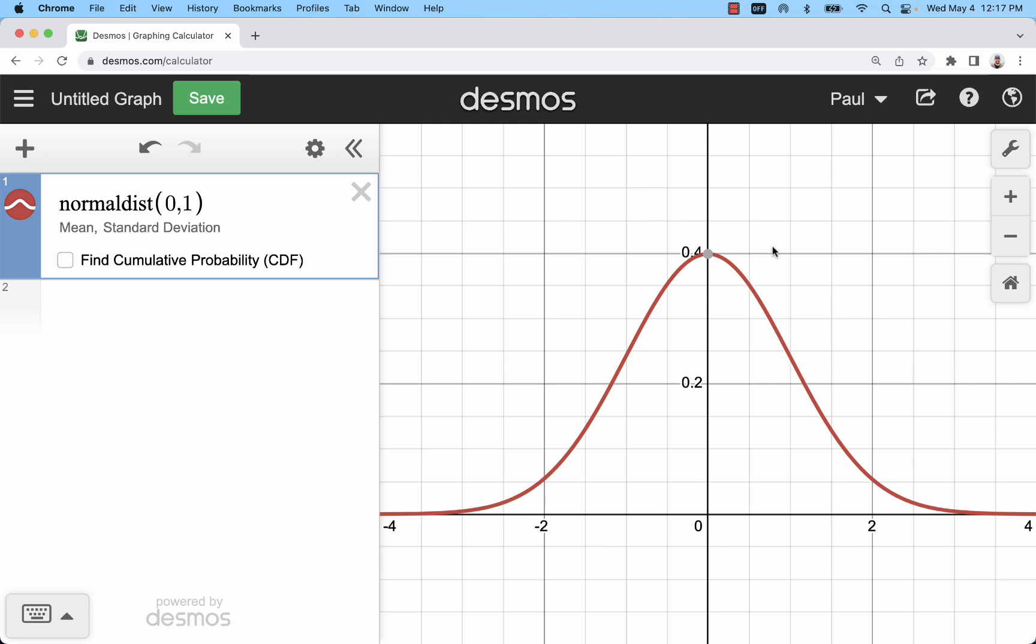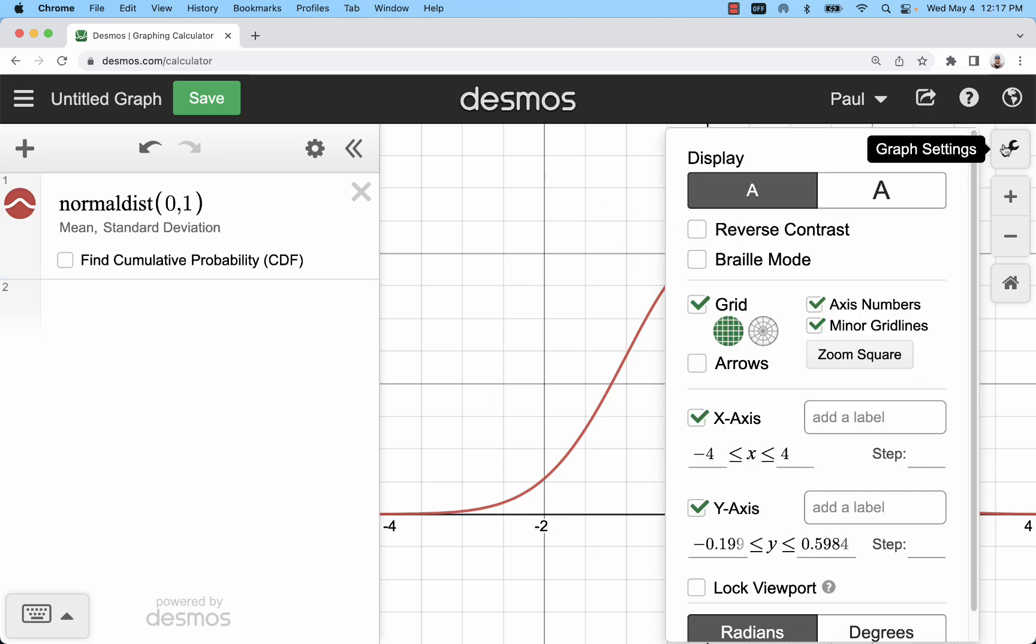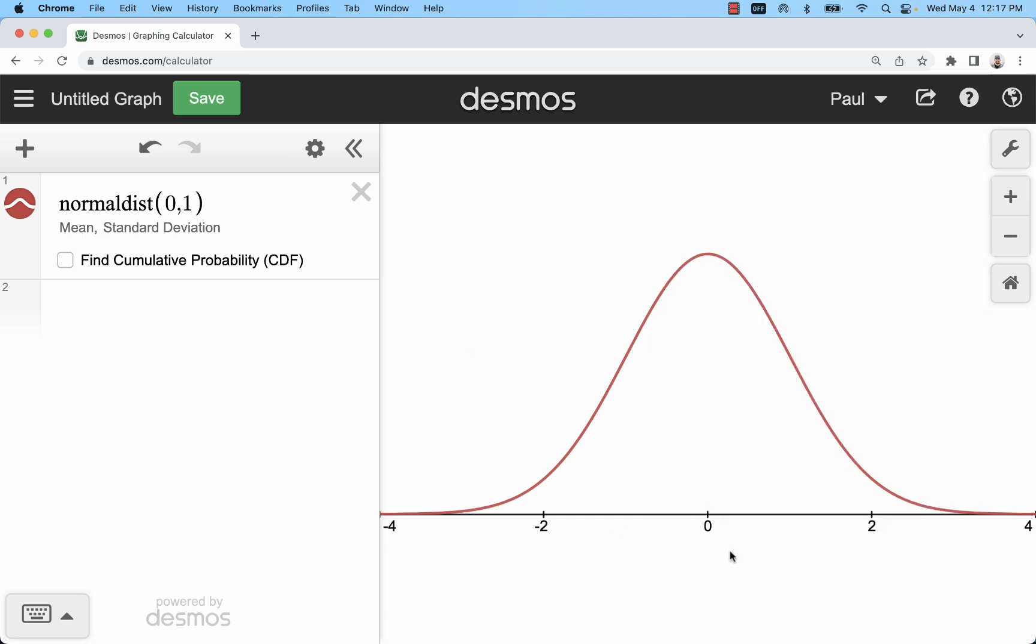When you're looking at this the Y value really does not matter too much. If you want to remove that axis you can. You can also even remove these grid lines. We really don't need them. All we're looking at is just the positions on the X axis. So I like to look at it this way.